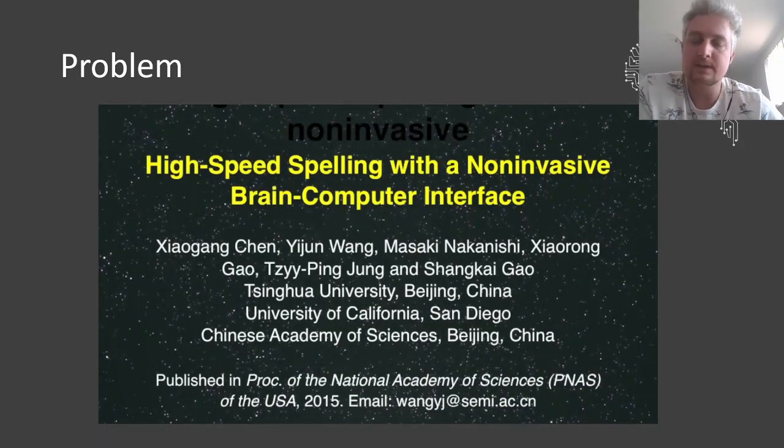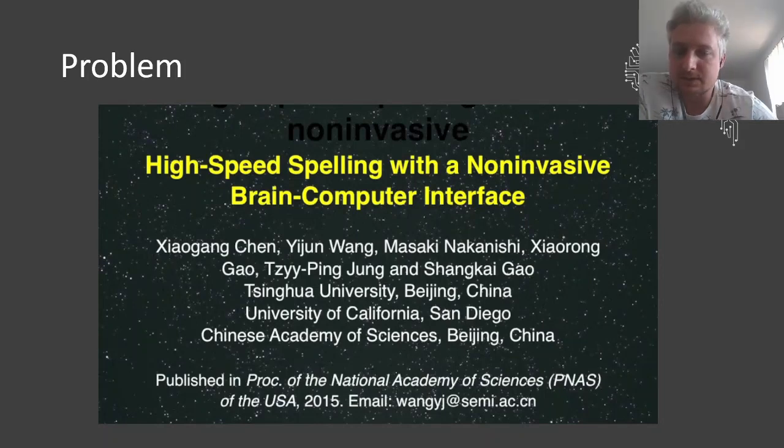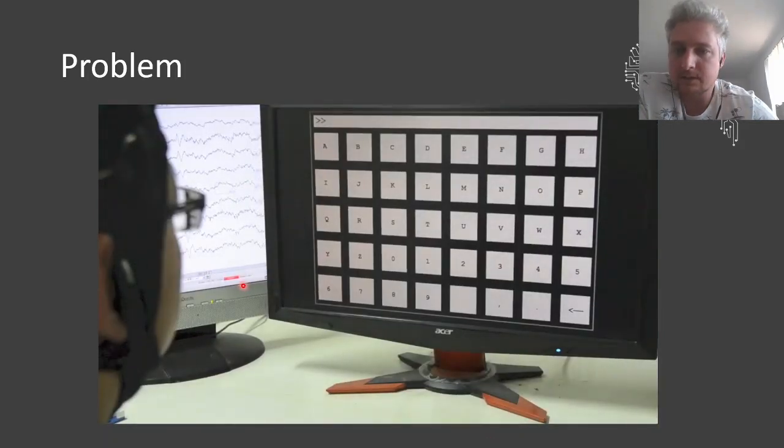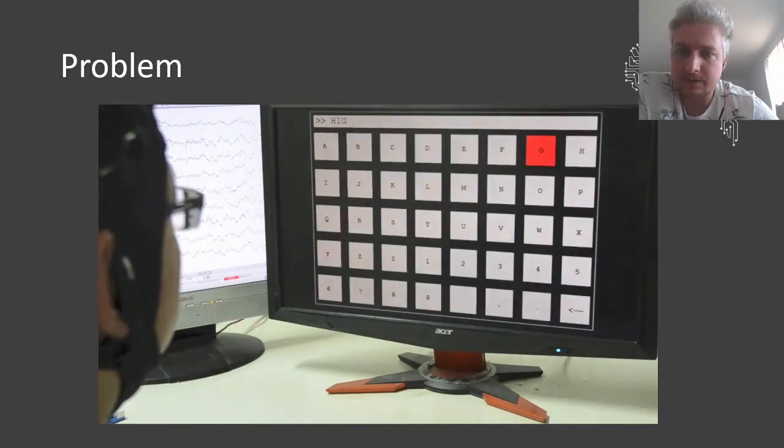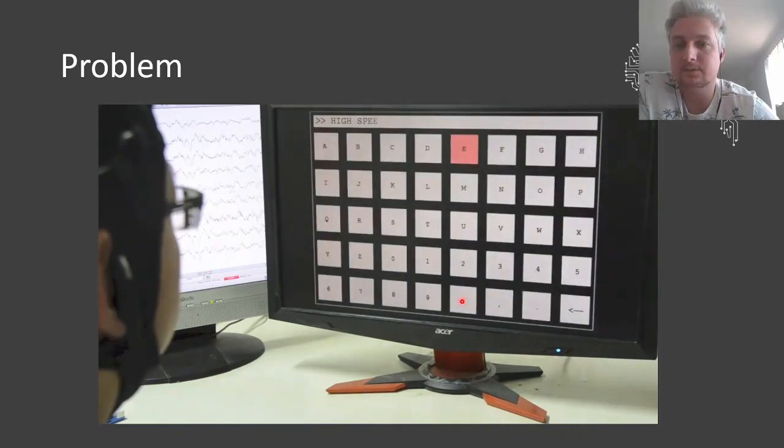So what is the problem with it? If you see this video about the state of the art currently, there is a person sitting wearing an EEG and looking at a screen with a keyboard where all the characters are flickering at different frequencies and he manages to type quite fast.